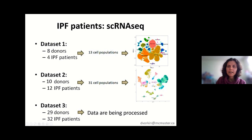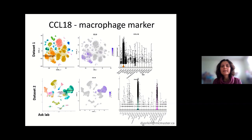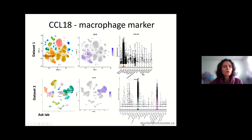The first example is one of the basic steps we can take with single cell RNA-seq data once we have defined our populations of interest — we can examine the expression of certain genes of interest. Here we have CCL18, which is a macrophage marker, and I'll show what we can do to see its expression in both datasets. On the left you see the same cell population plots as before.